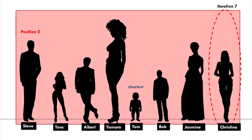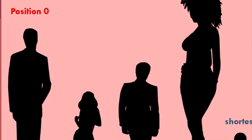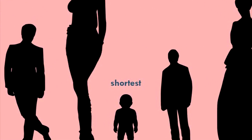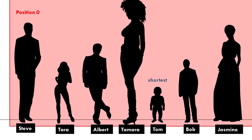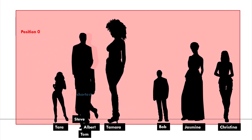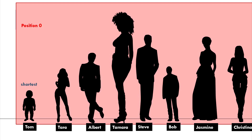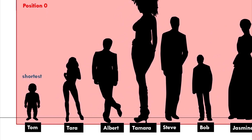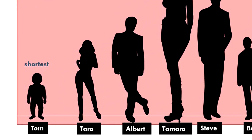In seven iterations, our scan is complete. We found the shortest person — Tom. The next step is to swap the shortest person's position with the current position that we are looking at, that is swap Steve and Tom. This way, the shortest person reaches the beginning of the group.